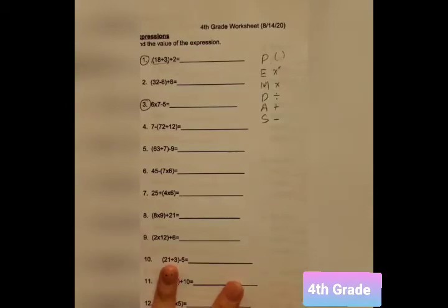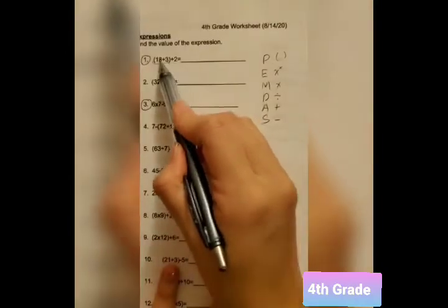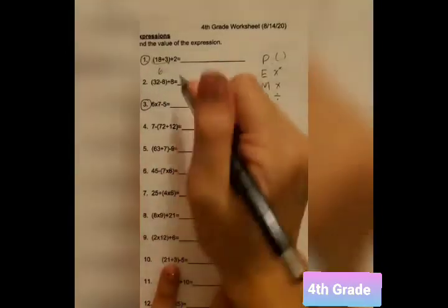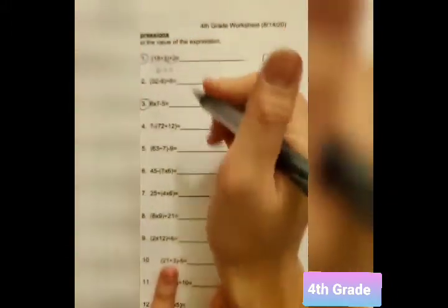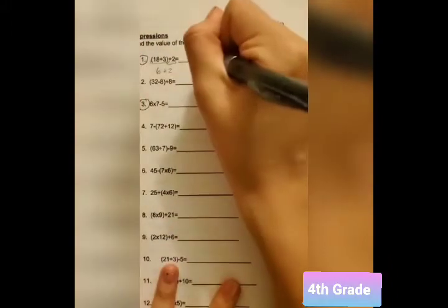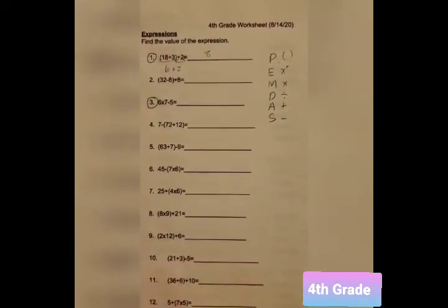And so, if we divide 18 by 3, we'll be getting 6. And we know this because 6 times 3 is 18. Now, we'll just bring this down. So, it'll be 6 plus 2. And 6 plus 2 is 8, so that is our answer for the very first question.